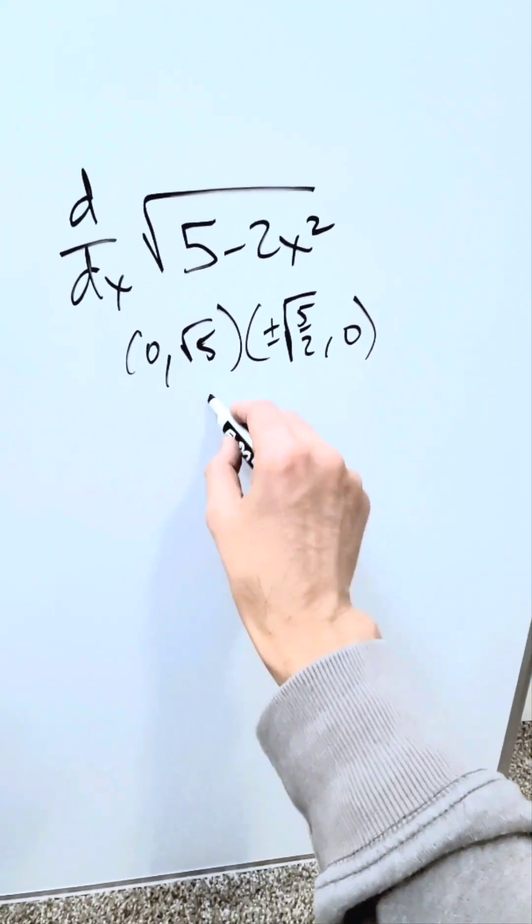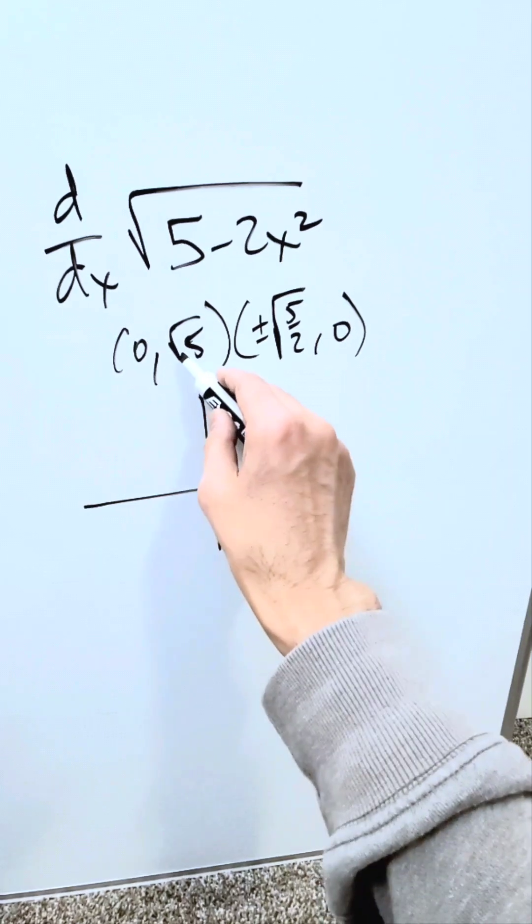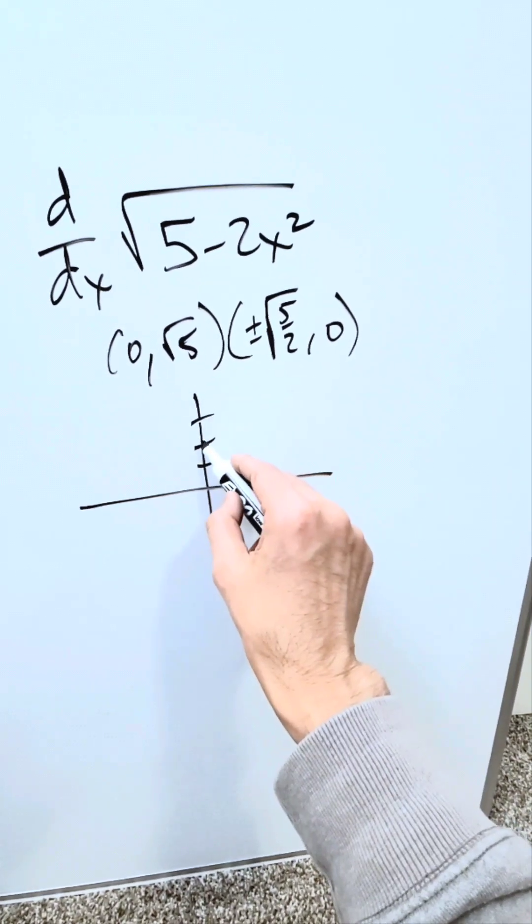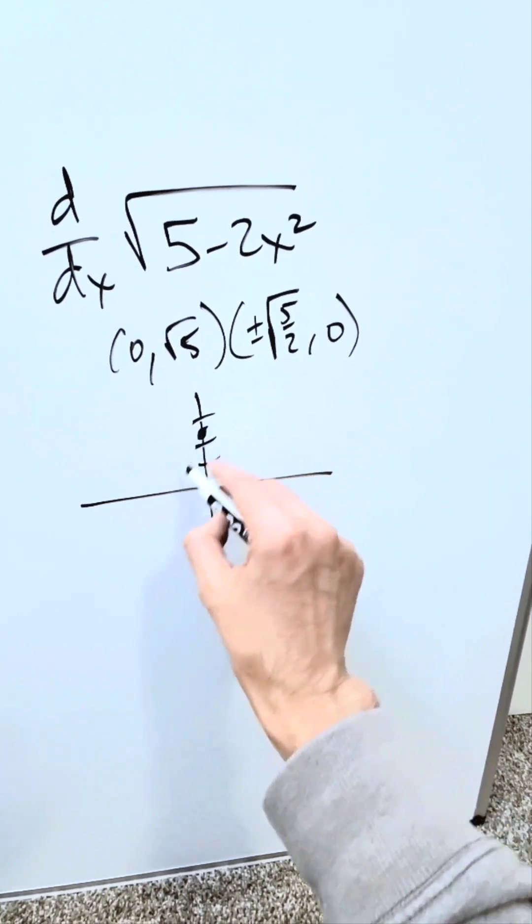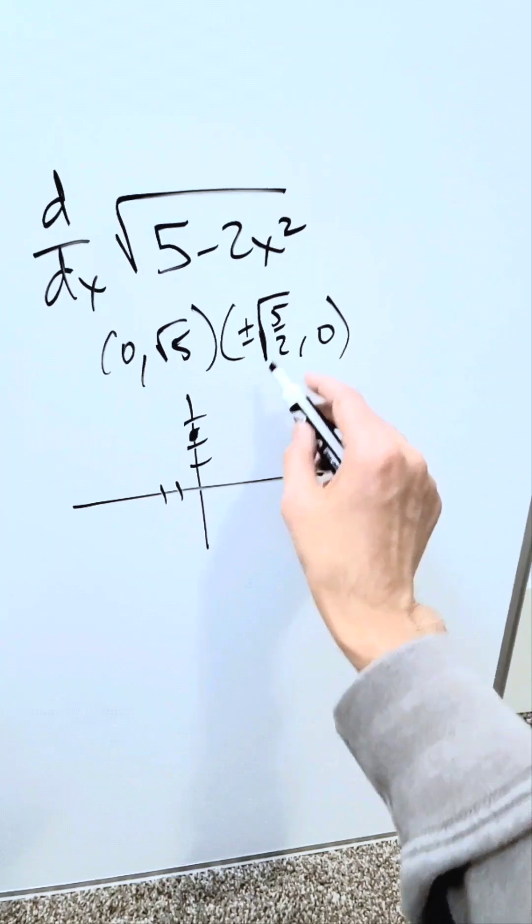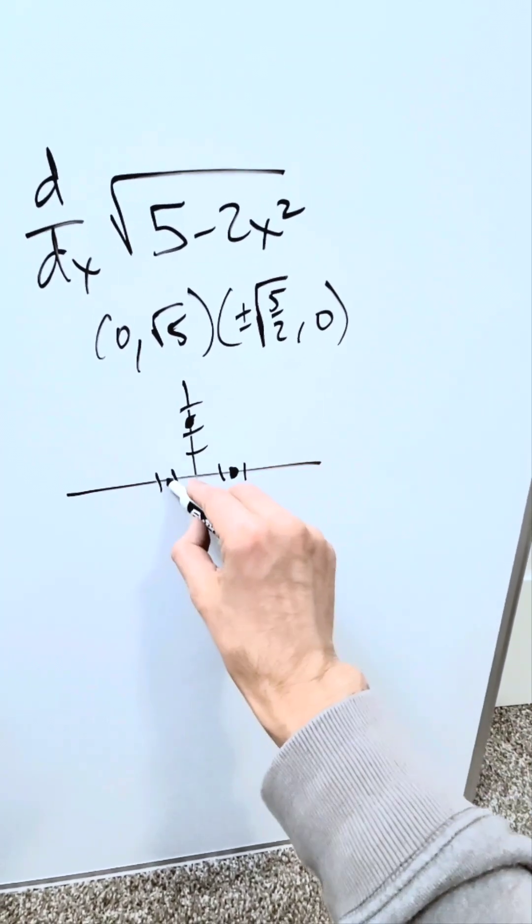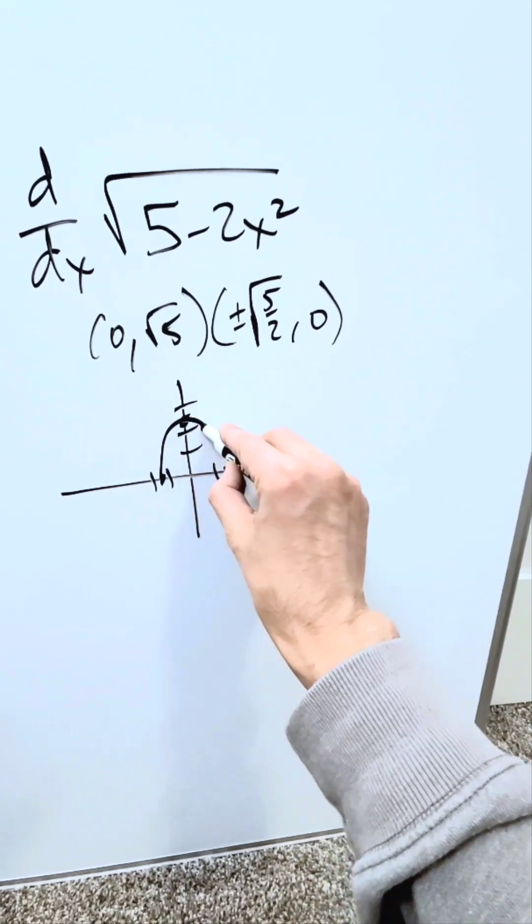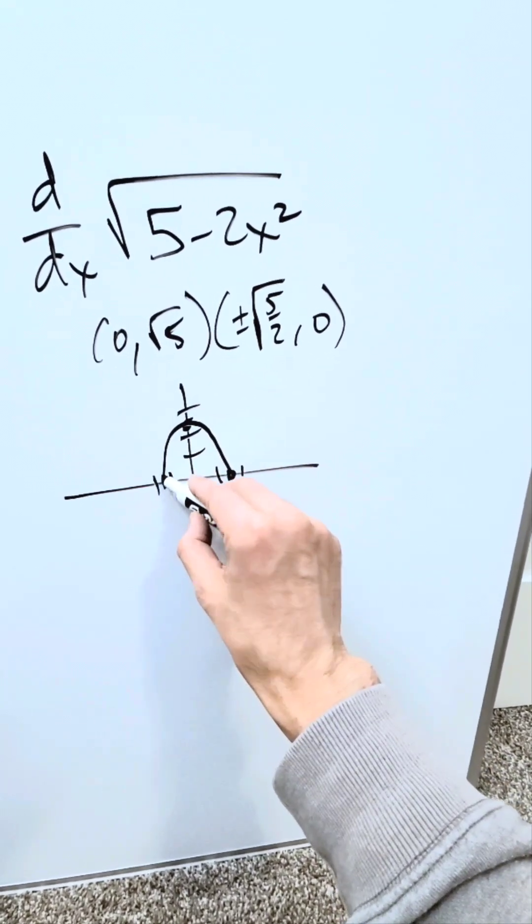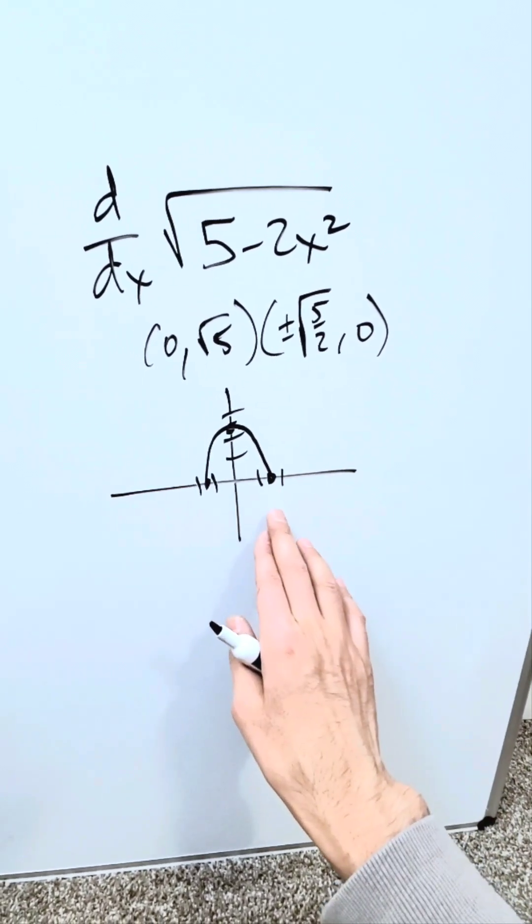These are the x-intercepts, and we'll graph them out. We have (0, √5). Root 5 is larger than 2 but less than 3, so we put a point here. √(5/2) is larger than 1 but less than 2. Positive and negative, we put them here. The graph looks something like this. It could be a little exaggerated, but this gives us a rough idea.